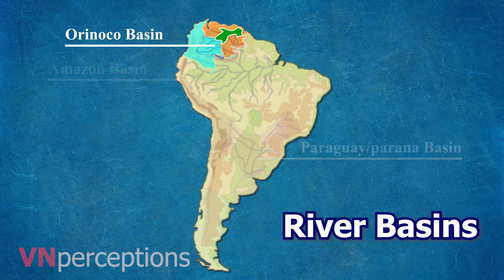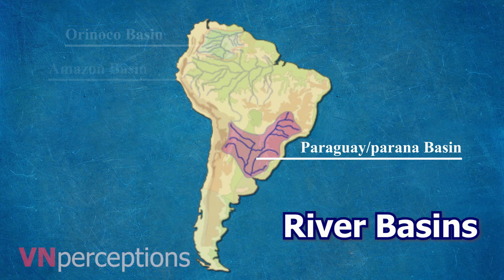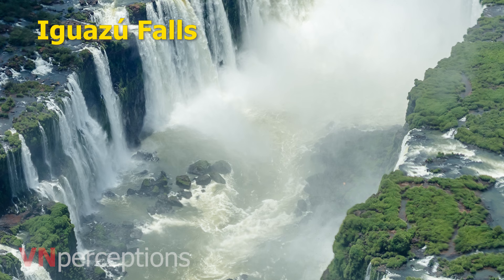The Paraguay-Paraná river system covers almost 2.8 million square kilometers, encompassing much of southeastern Brazil, Bolivia, Paraguay, and northern Argentina. The Paraná River includes Iguazu Falls, a massive series of waterfalls that extends for 2.7 kilometers.